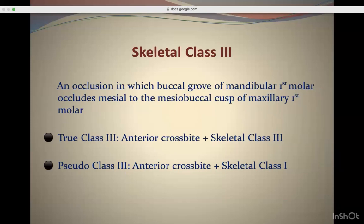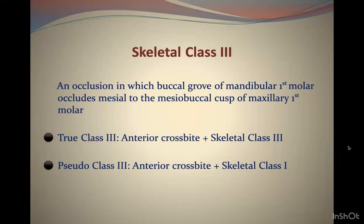There is also pseudo Class 3, where there is an anterior crossbite with a dental component, but it also has a functional Class 3 element — a CO-CR discrepancy. The midline is deviated when the patient opens the jaw, but is straight when the patient is in CR. There is an anterior crossbite and a shift of the mandible on closing. So the patient could present as true Class 3 or as functional/pseudo Class 3.